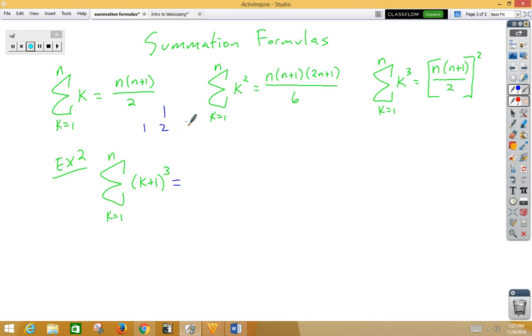1, 1, 2, 1, 1, 3, 3, 1. We can use that to help us foil, so we get k cubed plus 3k squared plus 3k plus 1.